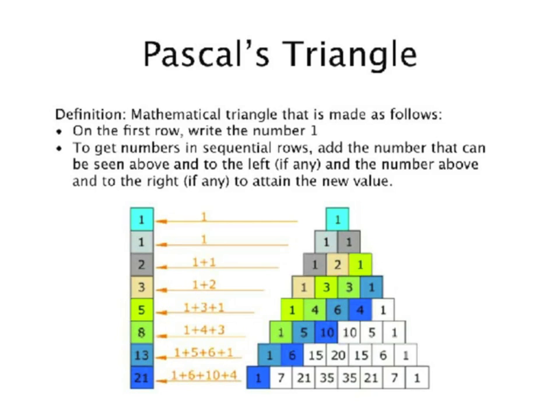Pascal's Triangle is a mathematical triangle that is made as follows. On the first row, you write the number 1. And to get the numbers in sequential rows, you add the numbers above to the left, if any, and the number above to the right, if any, to attain the new value. You can see here below we have an example of the first couple rows of Pascal's Triangle.